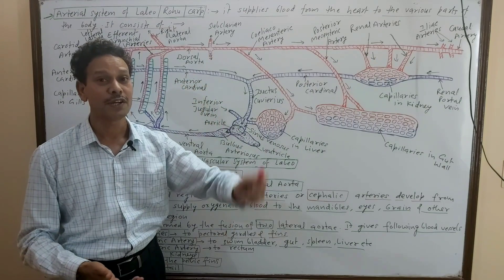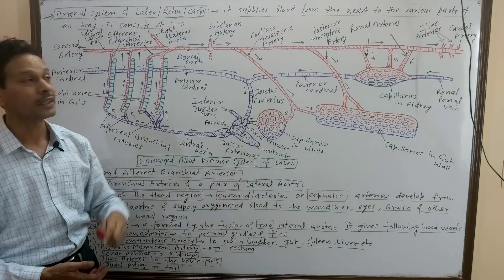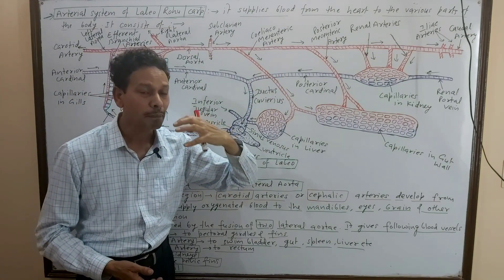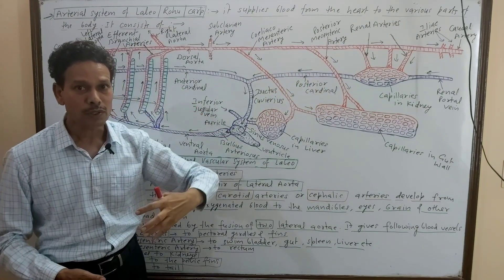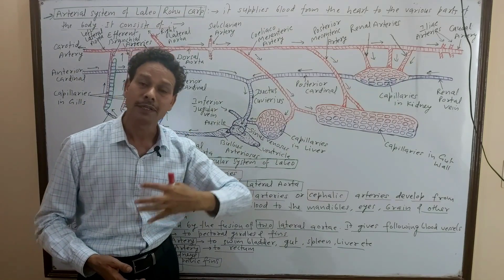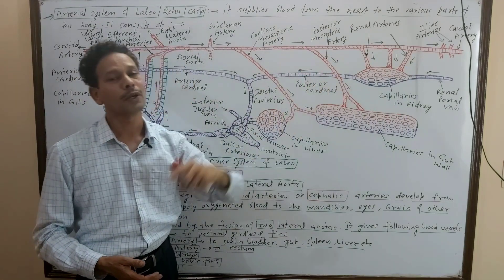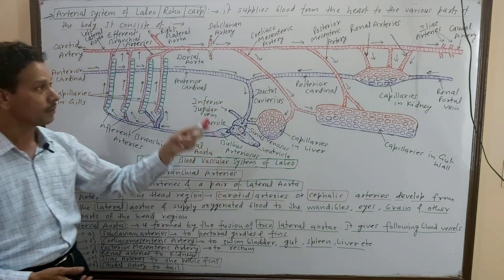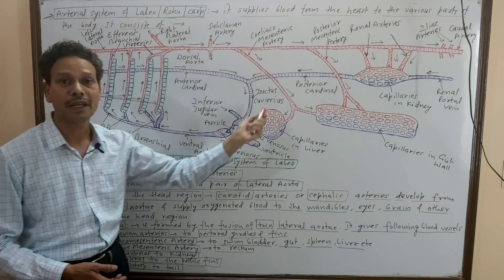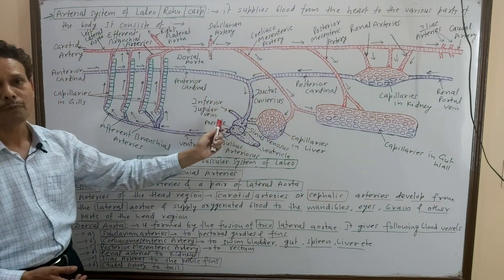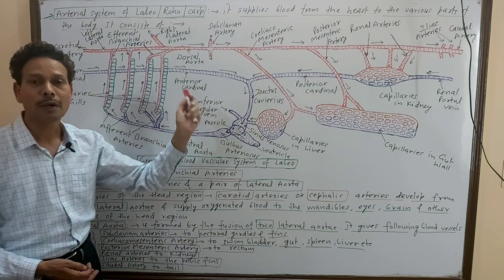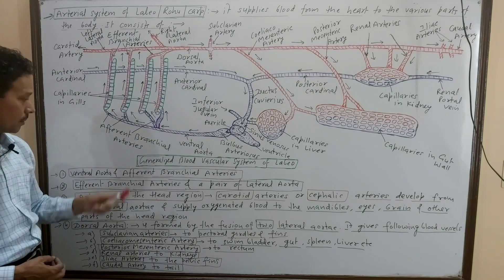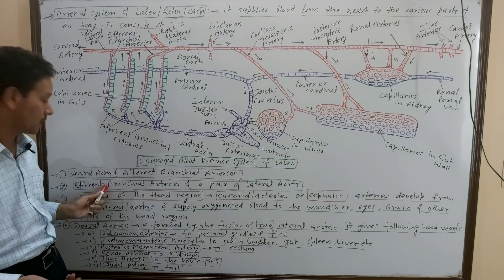The Rohu, the bony fish — this arterial system supplies blood from the heart to all body organs. We are discussing this arterial system from the diagram, which is very clear and a very important question — 100% exam question. This arterial system consists of the following blood vessels: the ventral aorta and afferent branchial arteries.